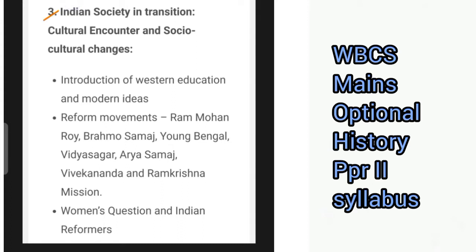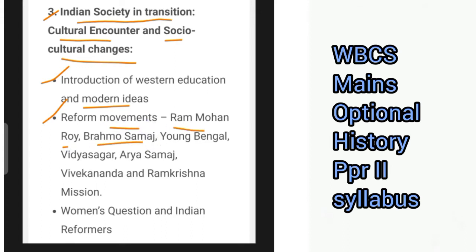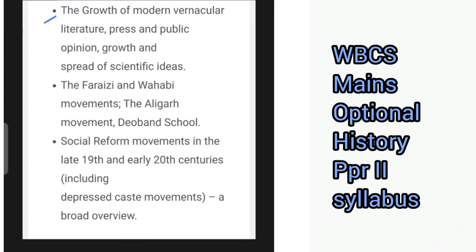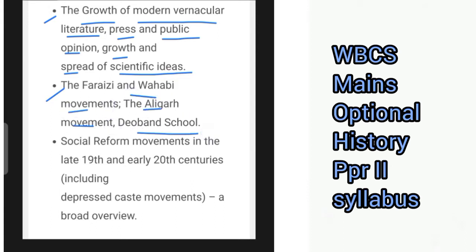Then there is the section on Indian society in transition — cultural encounter and socio-cultural changes — which includes the introduction of Western education and modern ideas, reform movements by Raja Ram Mohan Roy, the Brahmo Samaj, the Young Bengal, Vidyasagar, Arya Samaj, Vivekananda and Ram Krishna Mission, and women's question and Indian reformers. Also covered is the growth of modern vernacular literature, press and public opinion, growth and spread of scientific ideas, the Faraizi and Wahhabi movements, the Aligarh movement, the Deoband school, and social reform movements in the late 19th and early 20th centuries.